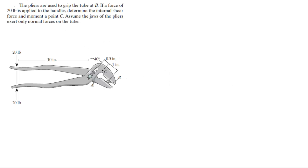Alright guys, this problem is much simpler than what it looks, so let me just explain it to you. The pliers are used to grip the tube at B, so they're gripping this tube right here. If a force of 20 pounds is applied to the handles, determine the internal shear at point C. Assume the jaws of the pliers accept only normal forces on the tube.